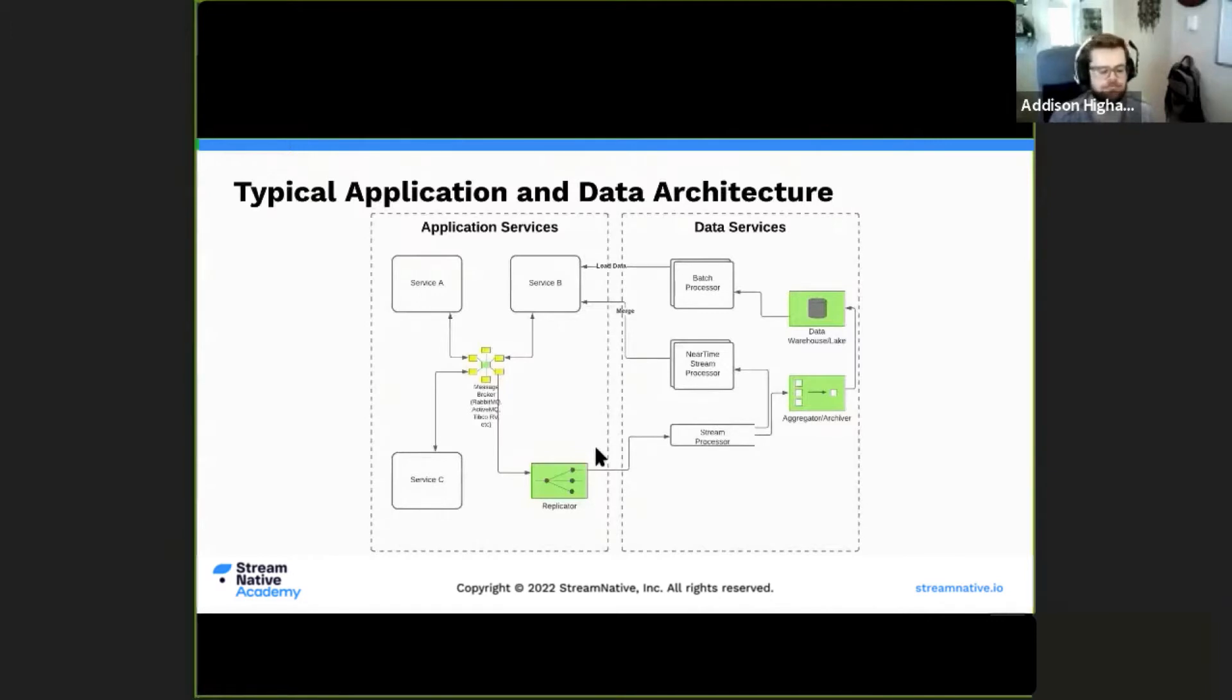These services need to communicate and pass messages. This is a common need of asynchronous messaging, and messaging patterns have existed for a long time. Systems like RabbitMQ, ActiveMQ—these provide things like fan out, work queues, and so on.